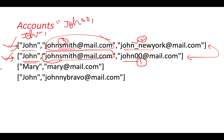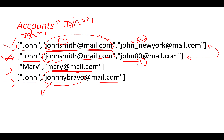The next account is Mary with email mary@mail.com. After that we have John with email johnnybravo@mail.com. This email doesn't match any previous account, so it's a standalone account. Similarly, mary@mail.com is independent. The email ID serves as the identifier for a particular account.